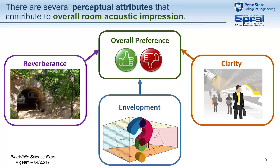There are other attributes that contribute to preference, but one key attribute that hasn't been studied very well is envelopment — the sense of the sound surrounding you in all directions. In order to better quantify envelopment, we need a quantity that we can measure about the sound field to determine if we achieved good or poor envelopment. It comes down to those reflections I showed you, and preliminary research has shown we need to know when the reflections arrive at the listener and what direction they come from — is it primarily from the front or behind, or really from all directions?